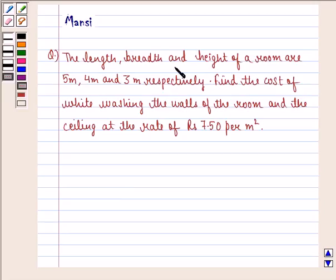The question says the length, breadth and height of a room are 5 meter, 4 meter and 3 meter respectively. Find the cost of whitewashing the walls of the room and the ceiling at the rate of rupees 7.50 per meter square.